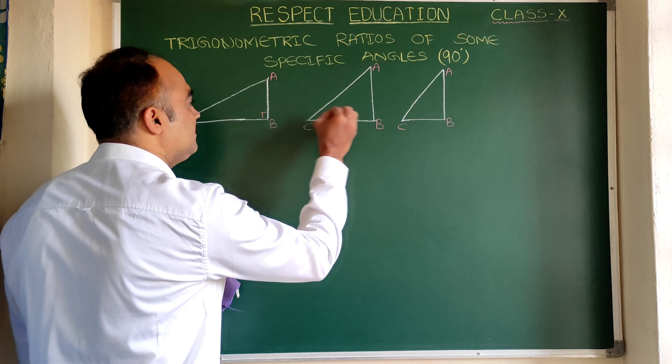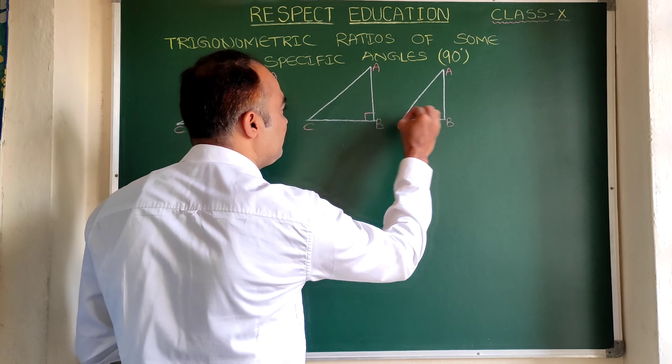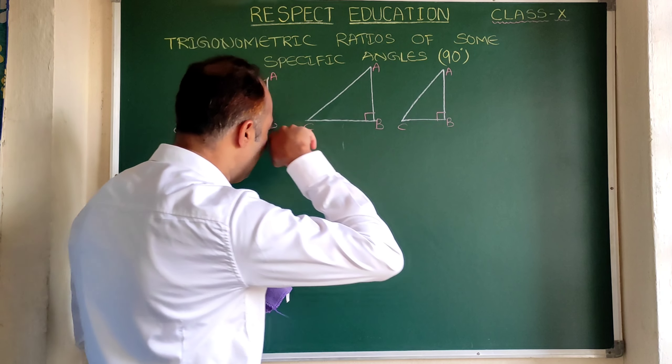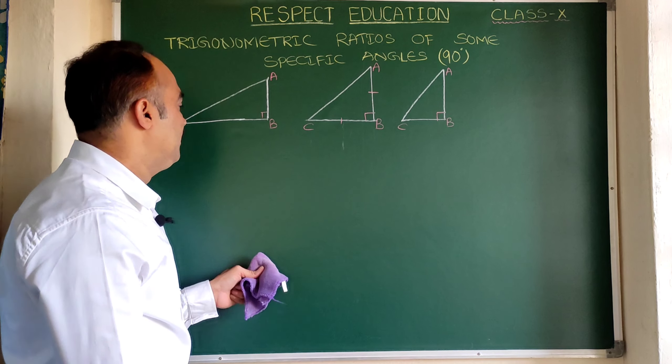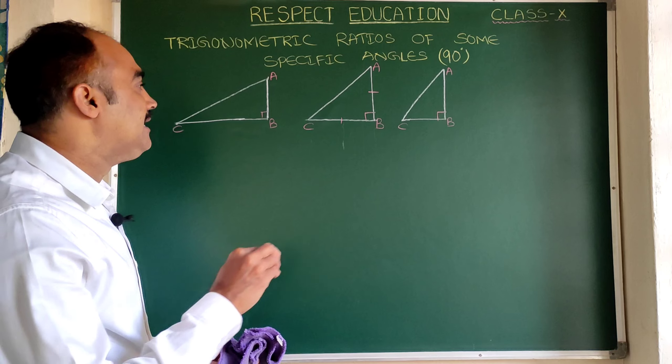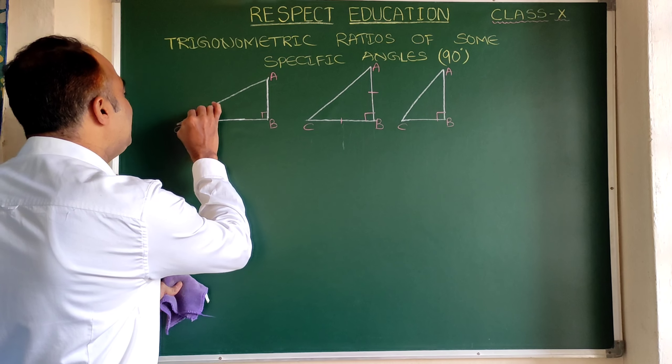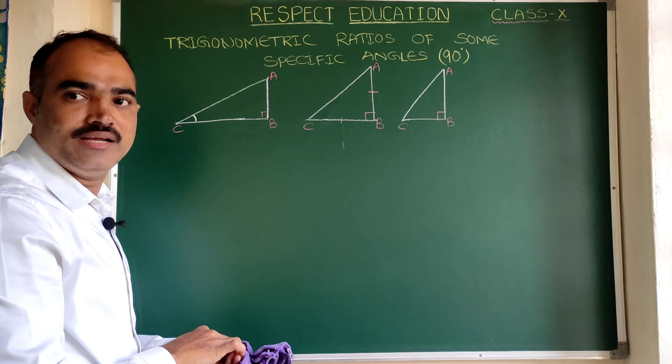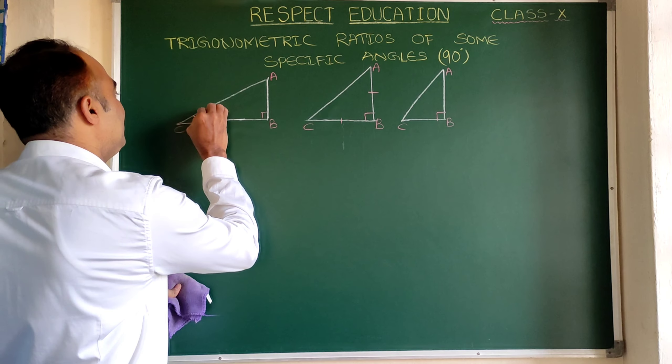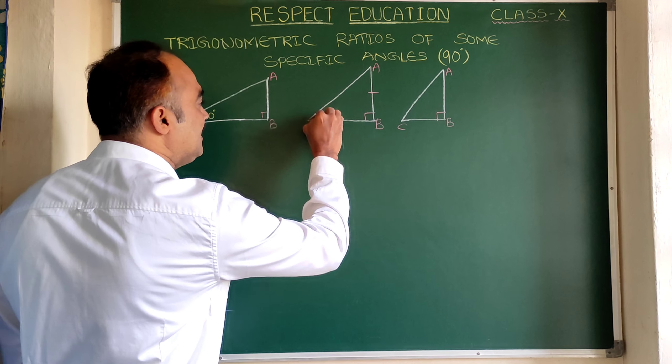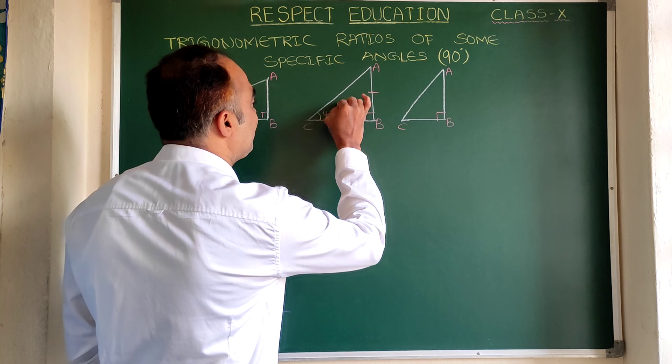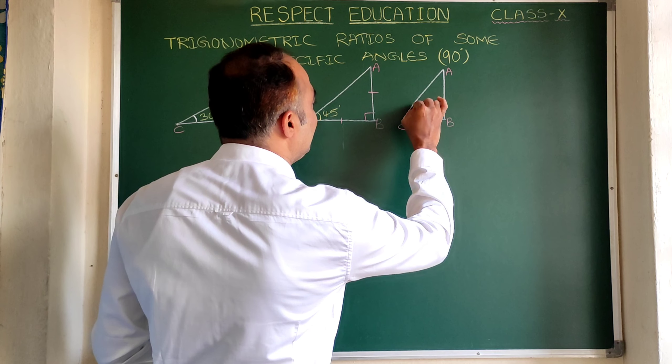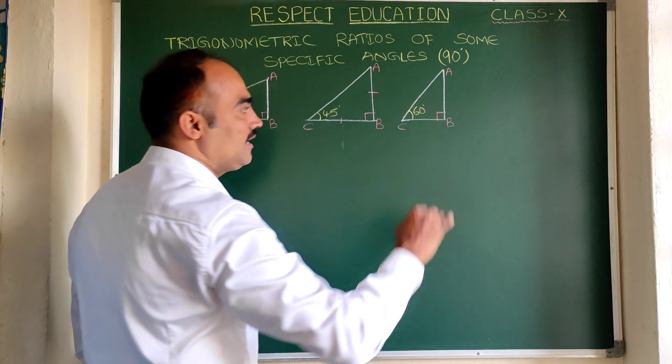Here angle B is 90 degrees. Here you can understand, these two are equal. Can anyone guess approximately what will be angle C here? 30 degrees, right? This is 30 degrees. Here, what is angle C? 45 degrees. Here angle? 60 degrees. Right.